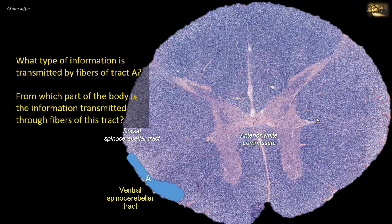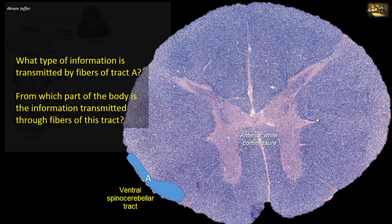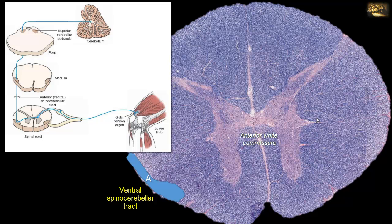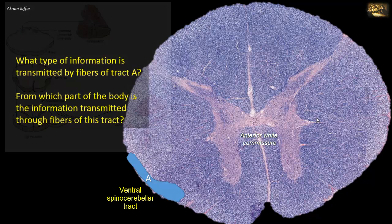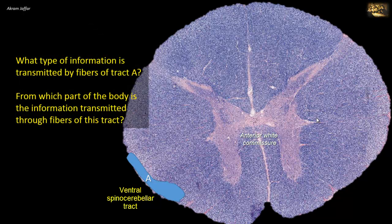The ventral spinal cerebellar tract, which is already crossed in the anterior white commissure at the level of the spinal cord, will cross again in the caudal midbrain, and therefore it is referred to as a double cross. As compared to the dorsal spinal cerebellar tract, the fibers of the dorsal spinal cerebellar tract do not decussate at all. Both the ventral and dorsal spinal cerebellar tracts convey proprioceptive information from the lower limb to the cerebellum.